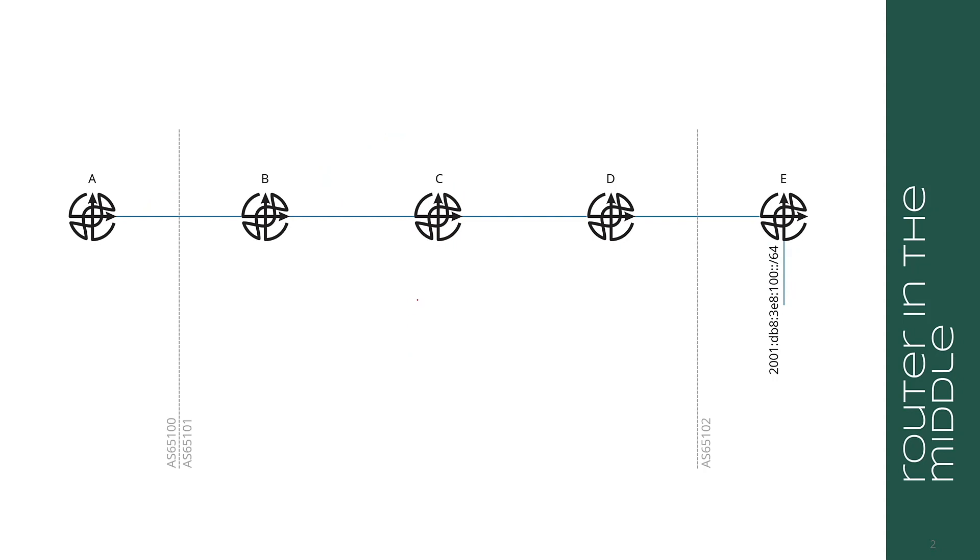Well the first most obvious way is for B and C to peer IBGP, C and D to peer IBGP, and then B and D to peer IBGP. So this is a full mesh of IBGP speakers.